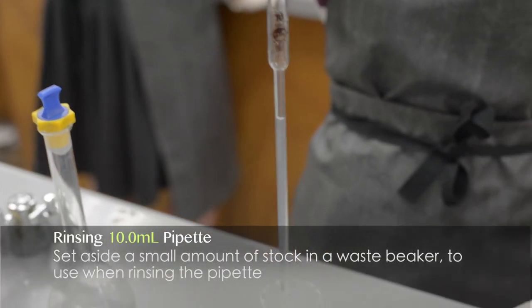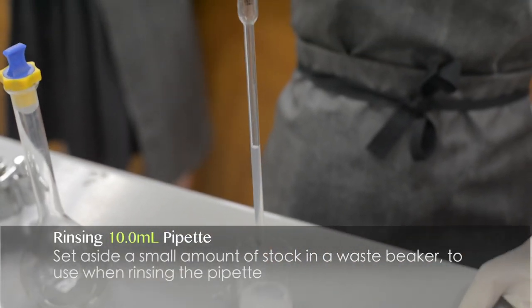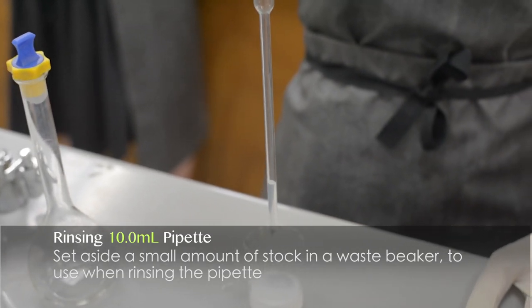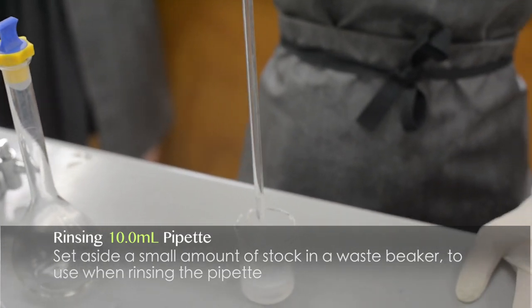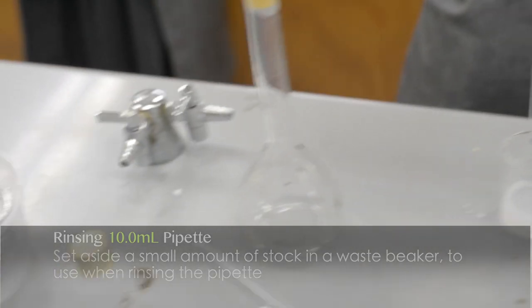Flushing out the 10 mL pipette with the platinum ammonia solution in a waste beaker before we're going to use it to measure an accurate amount from the stock from the bottom.